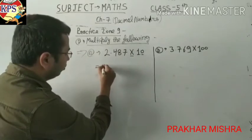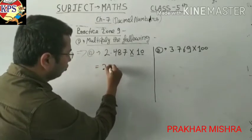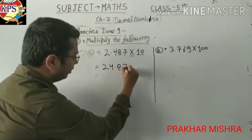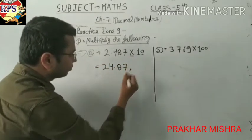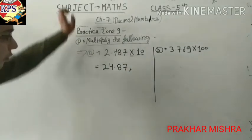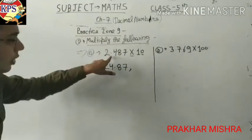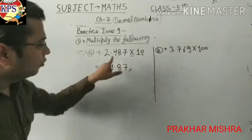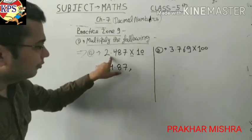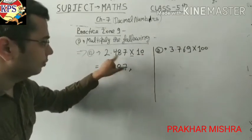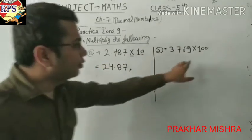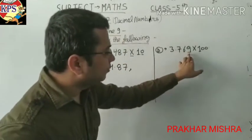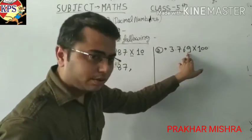Like that: 2.487 — wait, 24.87. This is the answer. First the point was there; because one zero is given here, the point will shift after one number. If two zeroes are given here, then the point will shift after two numbers.